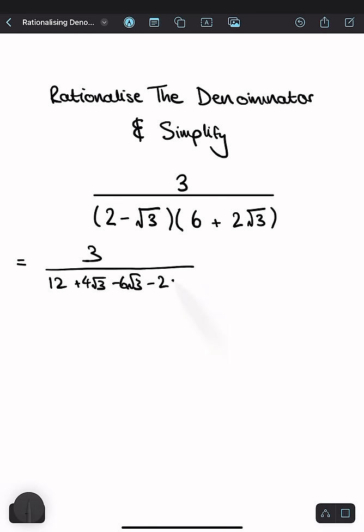Square root of 9 is just 3, so 2 times 3. Now let's simplify this. 3 divided by 12 minus 2 times 3, which is 12 minus 6 equals 6. 4√3 minus 6√3 is minus 2√3.